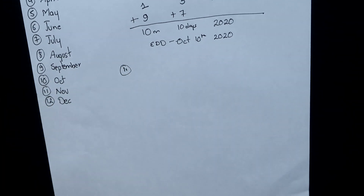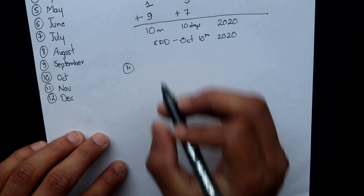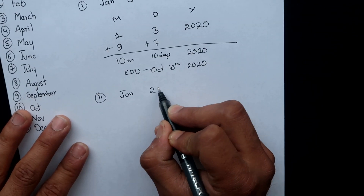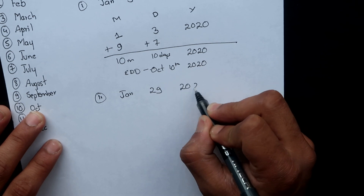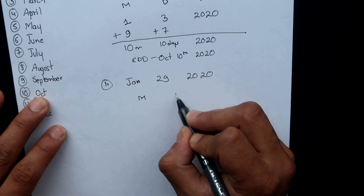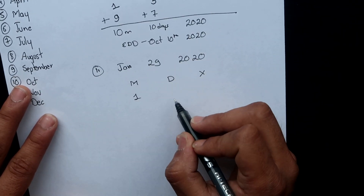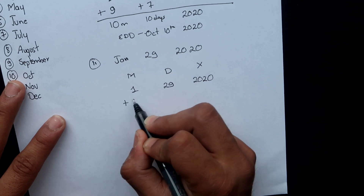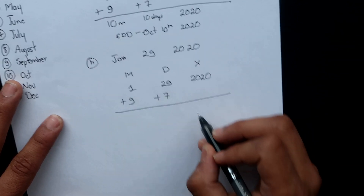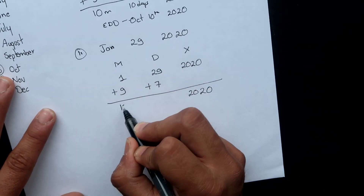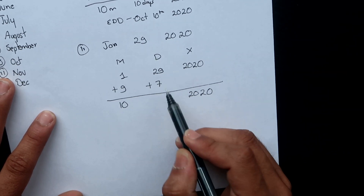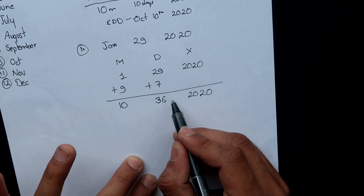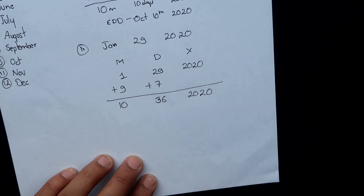Let's go for another example. Let's say the first day of the last menstrual period is January 29, 2020. In MDY format: Month = 1, Day = 29, Year = 2020. Applying the formula, we add nine months and seven days. The month becomes 10, but the day becomes 29 + 7 = 36. Something is odd here — we don't have 36 days in any month.